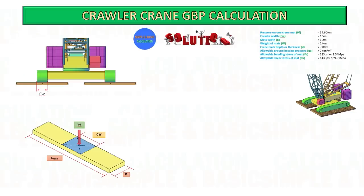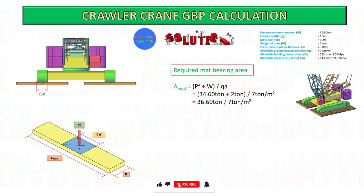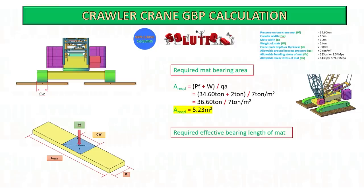The soil bearing method shows how to determine the required size of mat based on the allowable ground bearing pressure on site. Based on the formula given, substitute the data into the formula and start to calculate — you can pause the video to follow the computation. This gives the required mat bearing area by adding the load on the mat and weight of the mat, divided by the allowable ground bearing pressure.